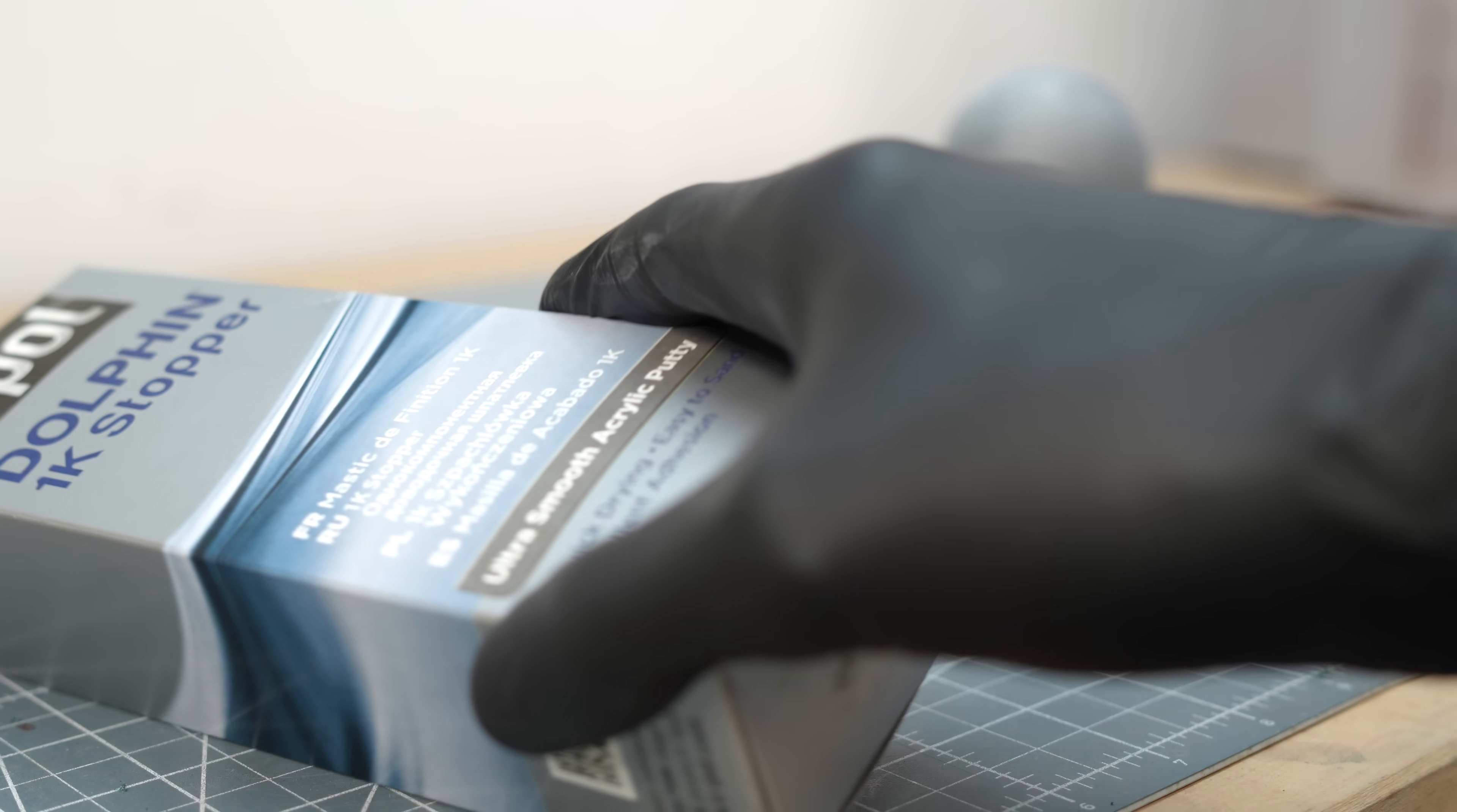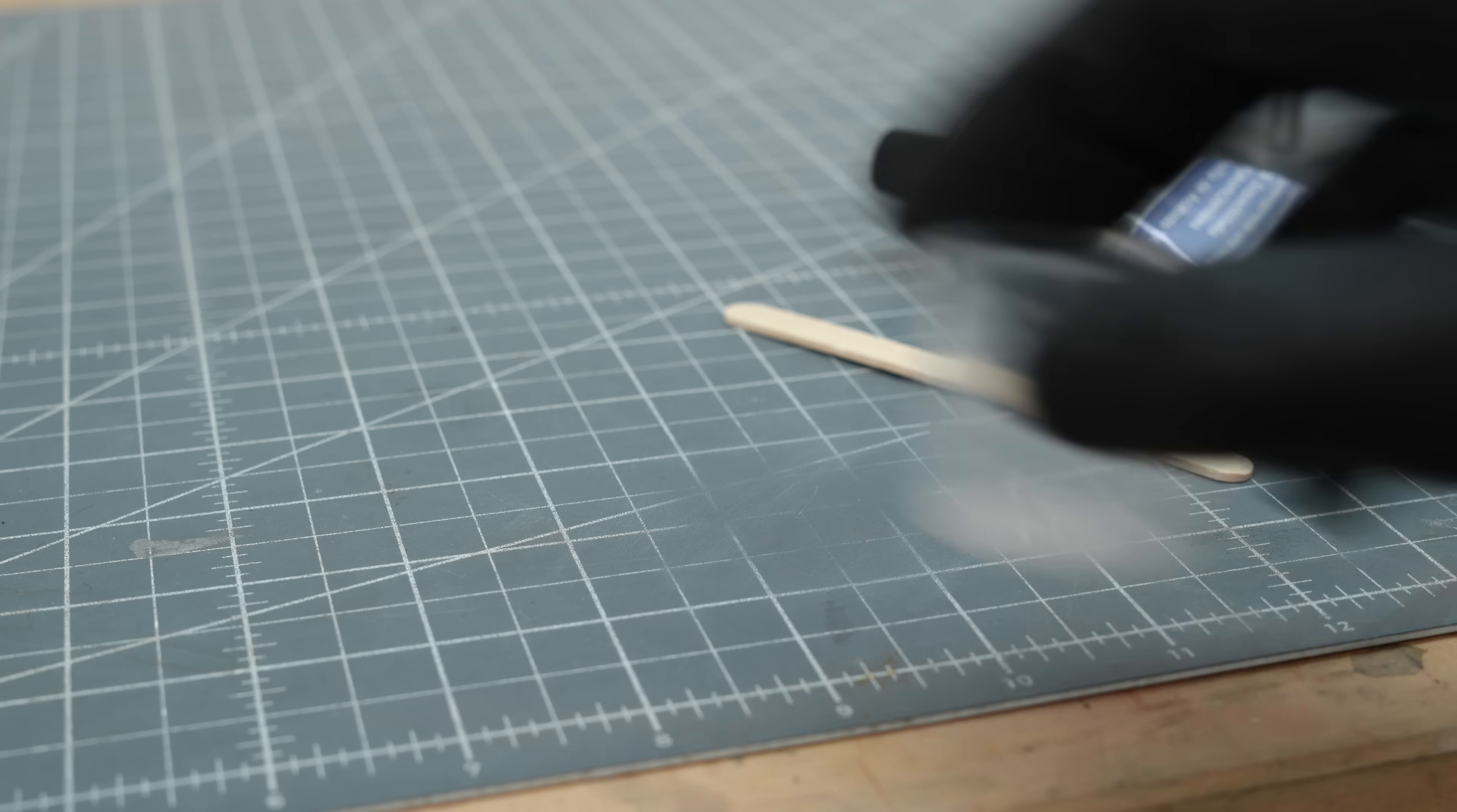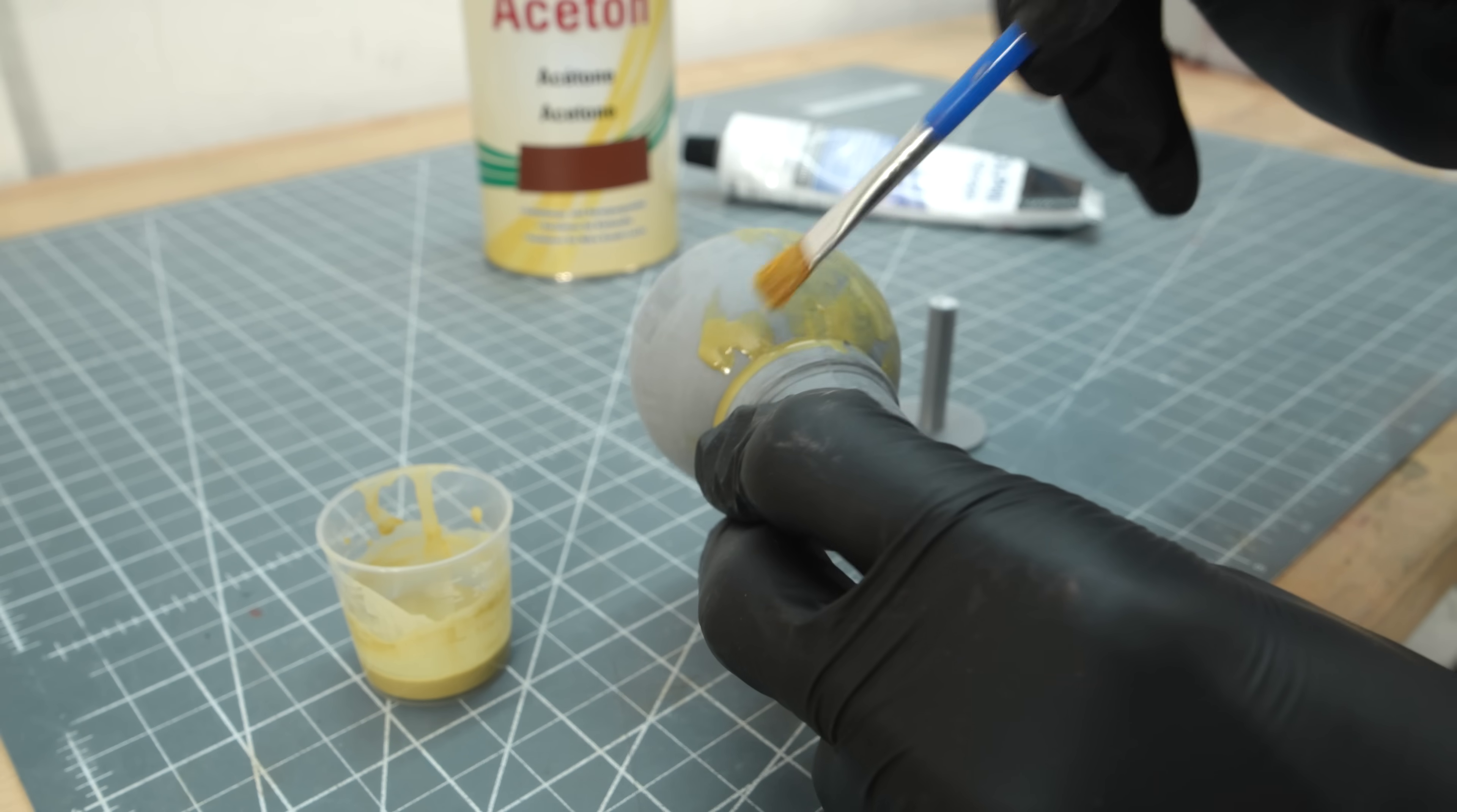Next up we have a type of putty. This stuff doesn't require a hardener and is designed to fill surface imperfections. When squeezed out, it's a bit too thick for my liking. So I use a small measuring cup to portion out a small amount, then add a bit of acetone to thin it down. After stirring well, I can apply this fast drying liquid with a brush.